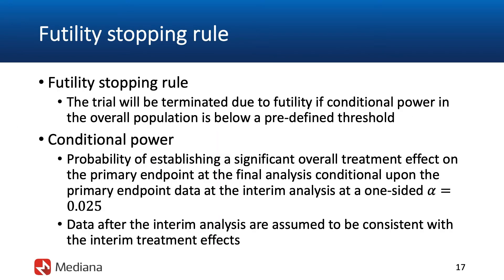The futility stopping rule will be defined in a very standard way at this interim analysis, using conditional power or predicted probability of success at the end of the trial given the data available to the trial sponsor at the time of the interim analysis. The trial will be stopped for futility — due to lack of efficacy in the overall population — if the resulting conditional power is quite low, for example below the 10% threshold.